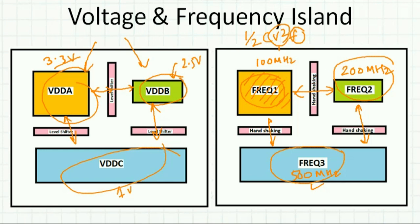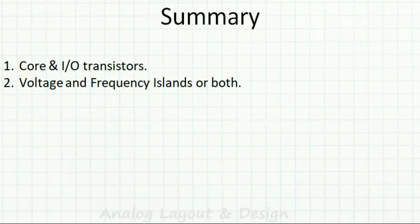We can also combine both: for example, 3.3V at 100 MHz, 2.5V at 200 MHz, and 1V at 500 MHz — or vice versa. Voltage and frequency islands can be mixed together. This requires a regulator that provides all the different supply voltages, and a clock synthesizer that provides all the different frequencies, but the power savings are substantial.